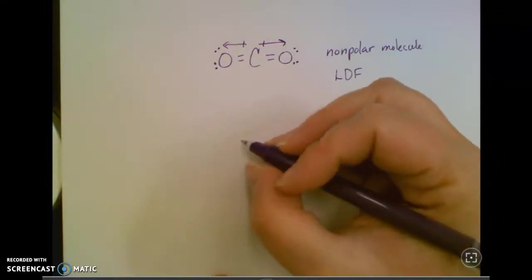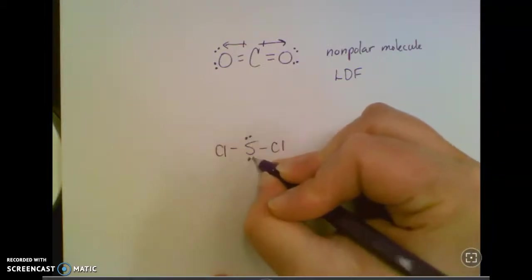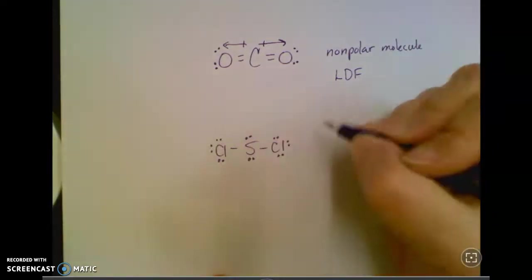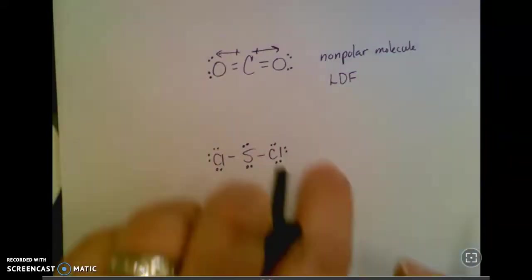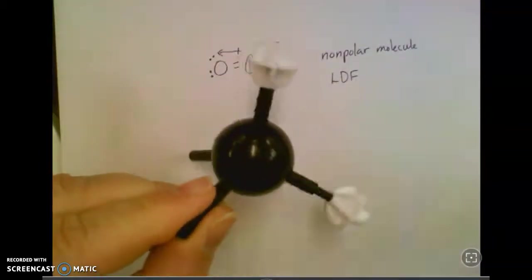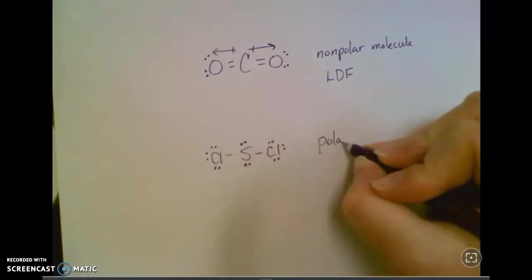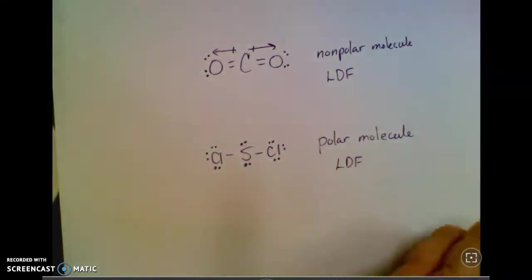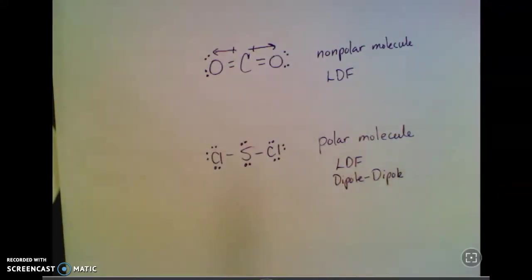If it's something like sulfur dichloride, I'm going to draw that Lewis structure. This one works out really nicely. You don't have to worry about double bonds. If I look at this shape in two dimensions, it looks kind of symmetrical. I have to think about the three-dimensional structure, which is going to be that bent shape. I've got one end where the chlorines are, one end where these unshared pairs are. So this is actually a polar molecule. Everything is not evenly spread around it. Since it's polar, it has LDF because everything has LDF, but I'm also going to say it has dipole forces.